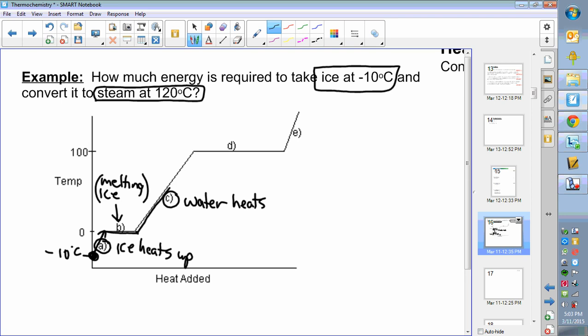That's part c. Part d is where we would have water at 100 degrees becoming steam at 100 degrees, so this is boiling, but 100 degrees stays at 100 degrees. Now you go from steam at 100 degrees up to steam at 120, so that is steam heats up.